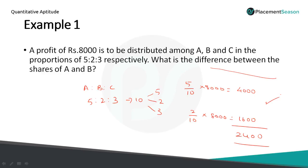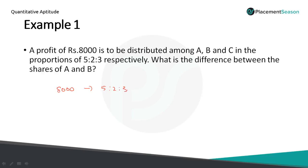So let us discuss the same problem in an alternate method. Here total price is 8000. The ratio is 5:2:3. If you add you will get 10. So divide this 8000 by 10. So 1 part will be equal to 800.